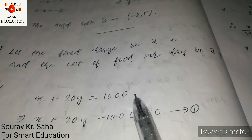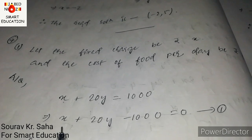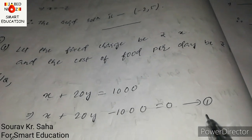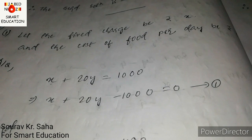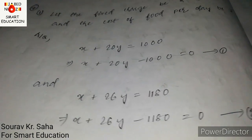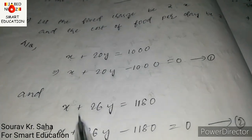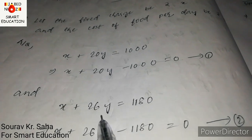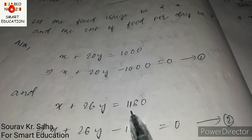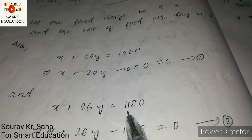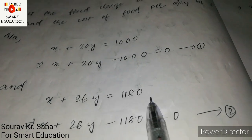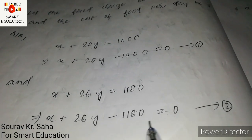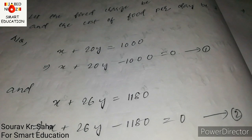For student A: x plus 20y equals 1000. Bringing to the left-hand side: x plus 20y minus 1000 equal to 0. This is equation one. For student B, who takes food for 26 days: x plus 26y equals 1180. Rearranging: x plus 26y minus 1180 equal to 0. This is equation two.